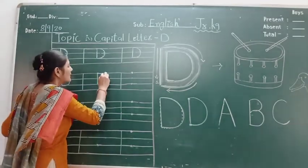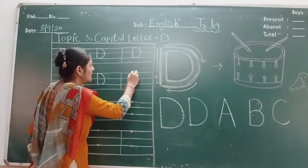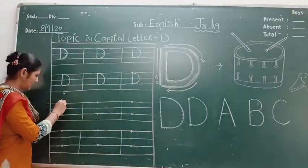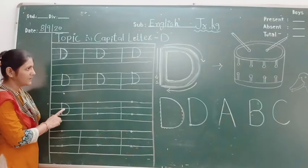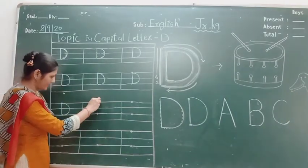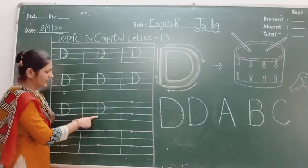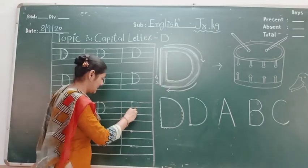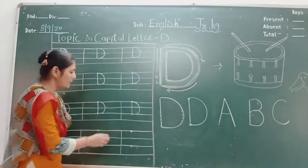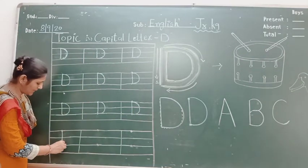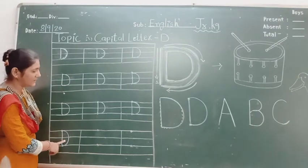Standing line, curve line — make a capital letter D. D for dog. Standing line, curve line — make a capital letter D. D for dog. Same here: standing line, curve line — make a capital letter D. Standing line and curve line — D for dog.